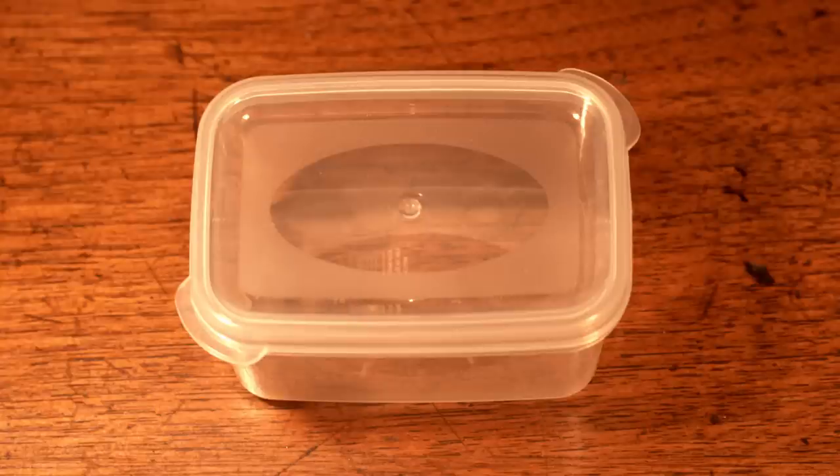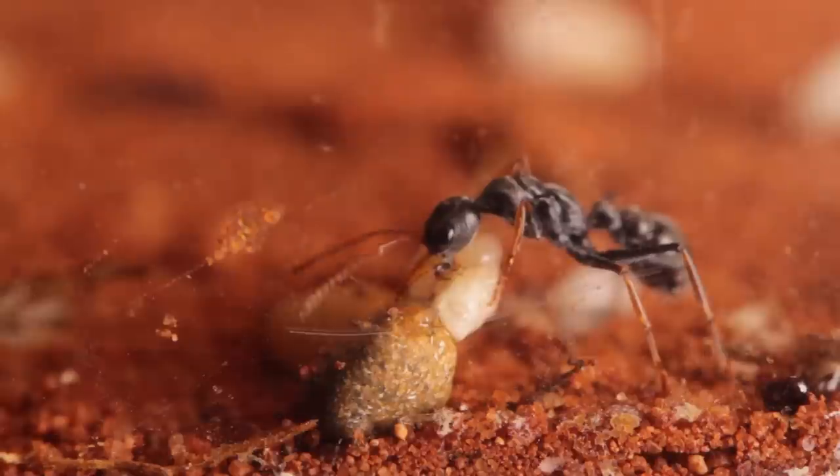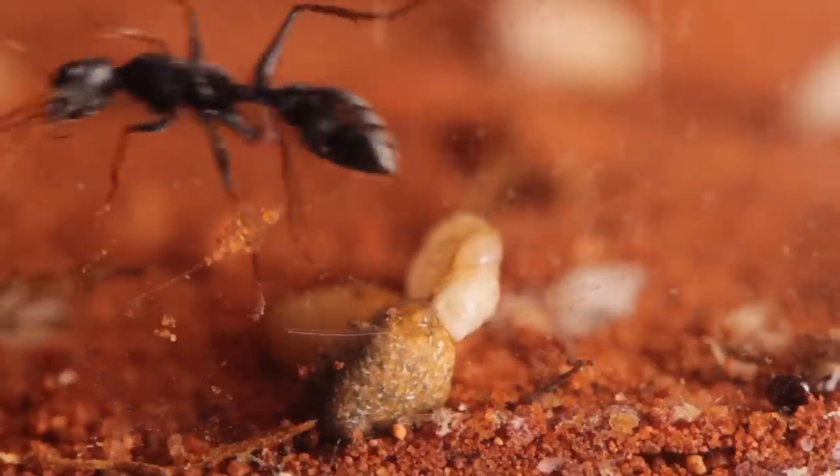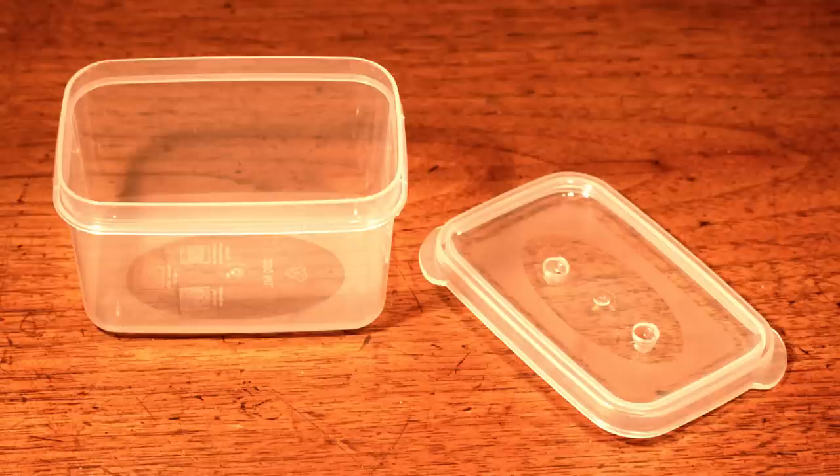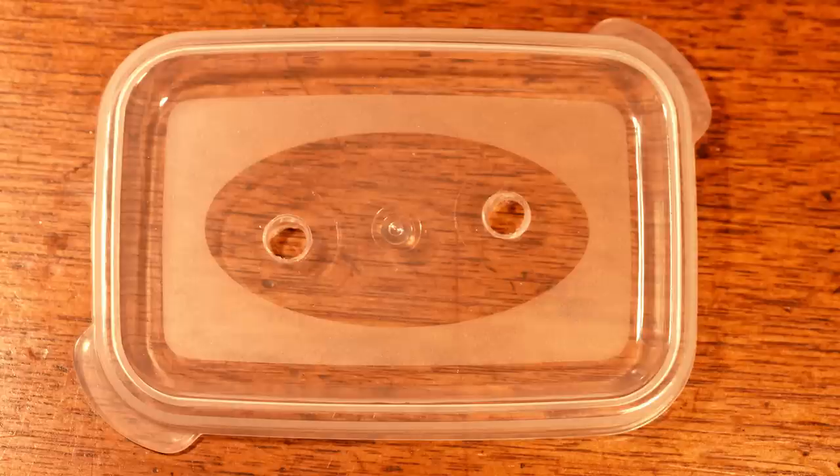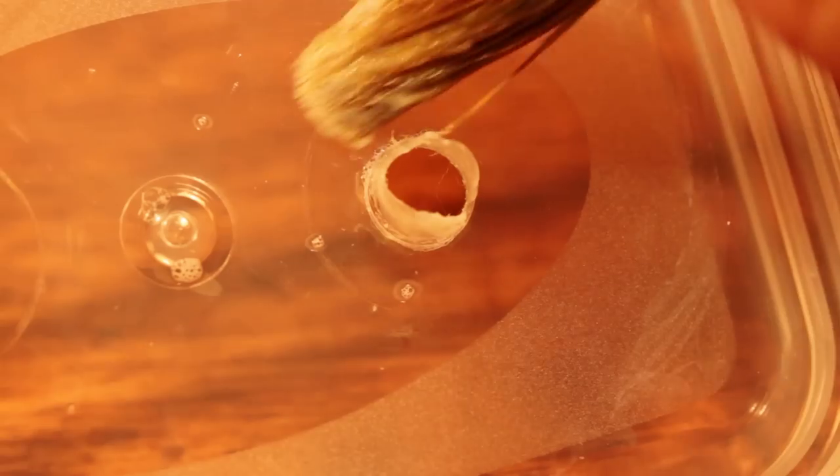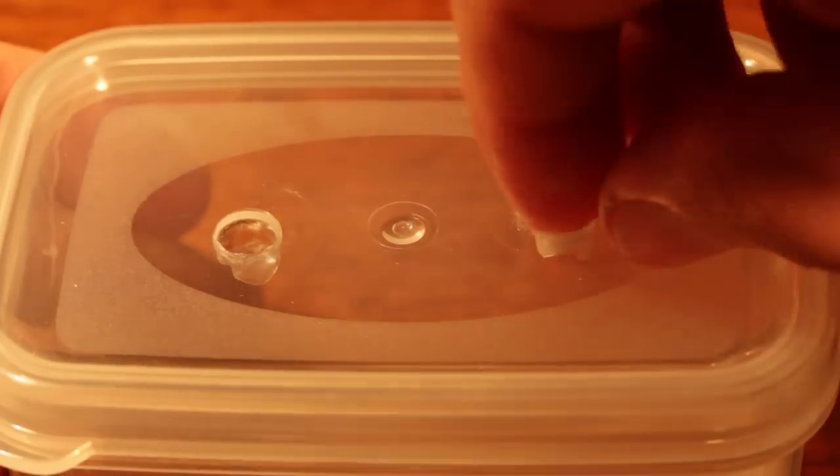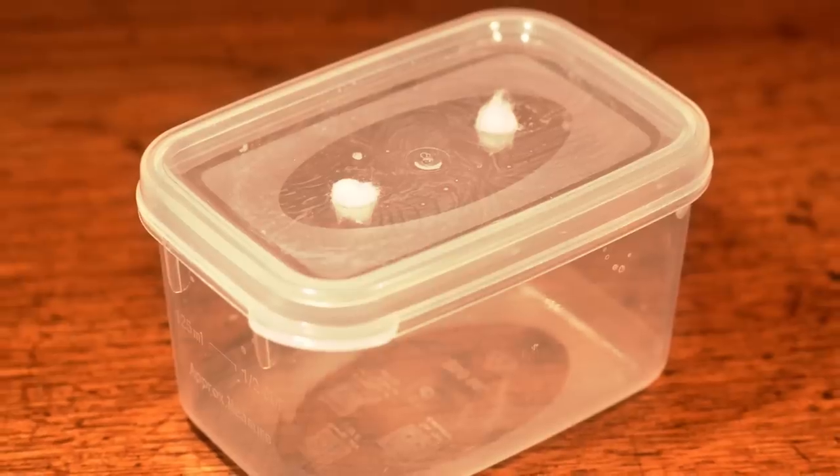For added security, it helps having a tight fitting lid, just in case some nifty ants manage to find a way up. However, you still need to allow for some ventilation. This can be achieved by simply cutting some holes into the lid, then just applying some Fluon around them, and or stuffing them with some permeable material, like cotton wool.